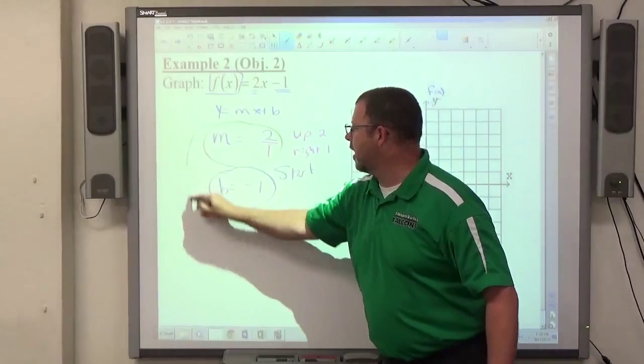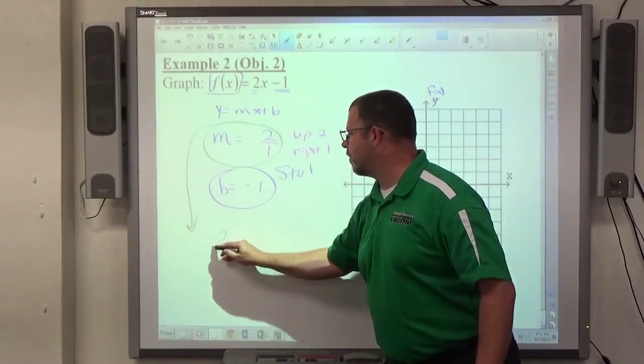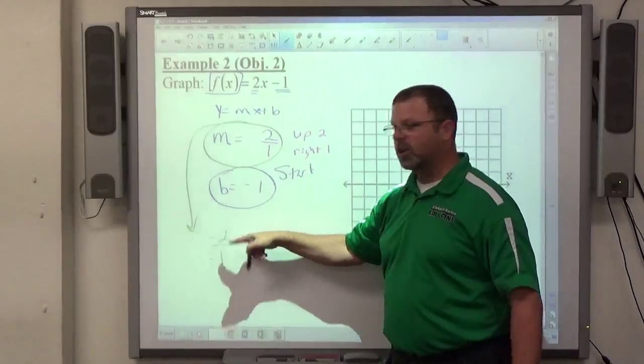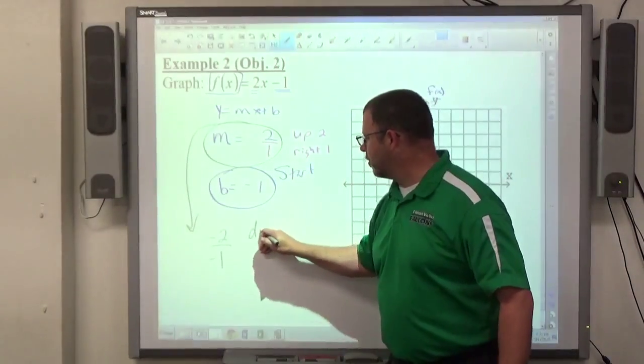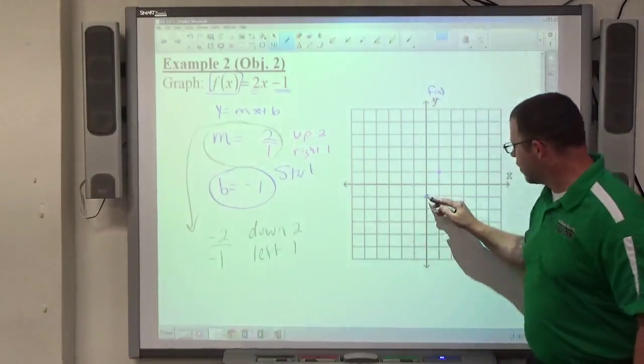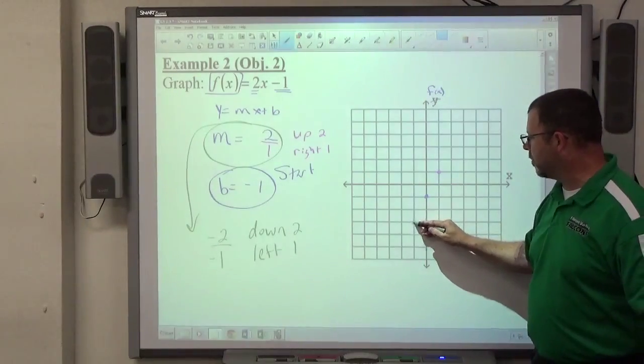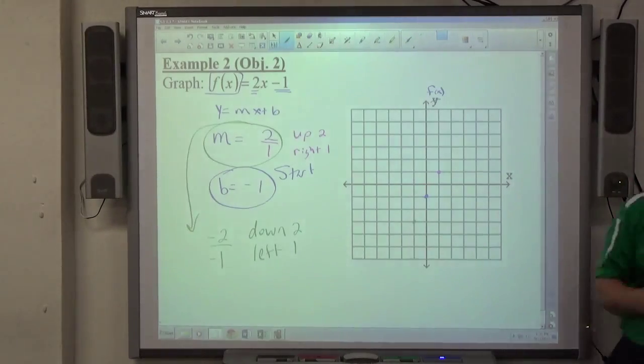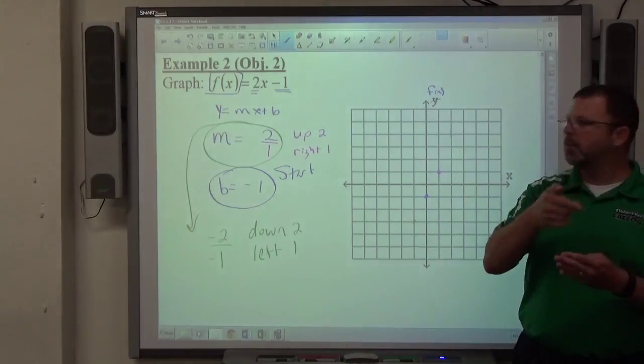If I take a look at my slope, if I had negative 2 over negative 1, that also is a positive 2 slope, right? Two negatives make a positive. That would be down 2 and left 1. If I go down 2, left 1, that also gets me a point. All three of those points line up on the same line. All you need is 2 points to graph a line. You plot your y-intercept, use your slope to get a second point.